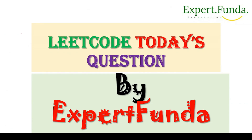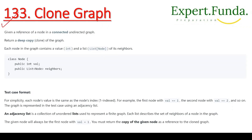Hello guys, this is Expert Funda and you're watching on YouTube. Today's question is LeetCode 133, Clone Graph. We have to clone the graph. We have given a reference of a node in a connected undirected graph, and we have to return a deep copy clone of the graph. Each node in the graph contains an int value and a list of its neighbors.